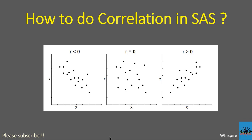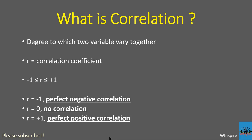Before doing correlation in SAS, let's briefly understand what correlation is. Basically, correlation is the degree to which two variables vary together. For example, height and weight — if height increases and weight increases or decreases, that is called correlation. If there is no relationship, then they are not related at all.